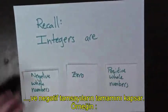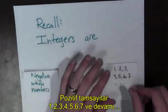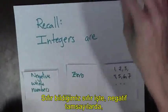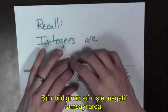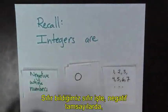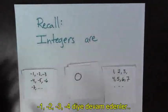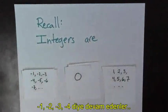And if you want an example of this, positive whole numbers are numbers like 1, 2, 3, 4, 5, 6, 7, and so on. 0, well, we all know what 0 is. And negative whole numbers are numbers like negative 1, negative 2, negative 3, negative 4, and so on.